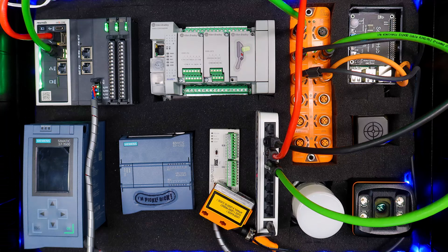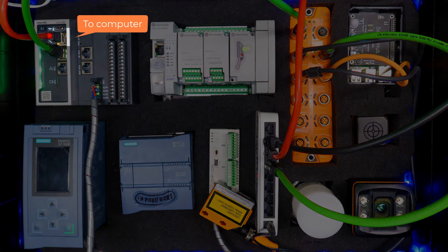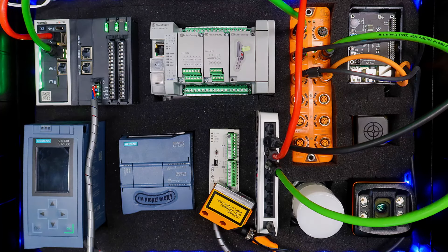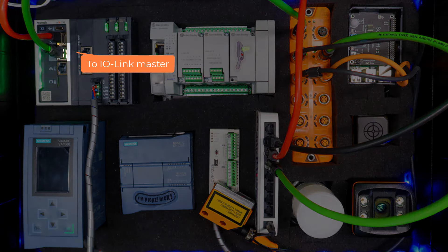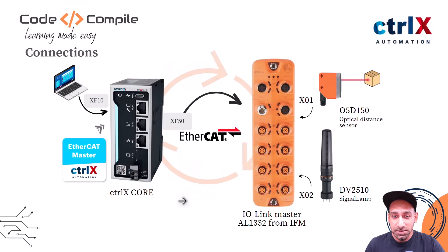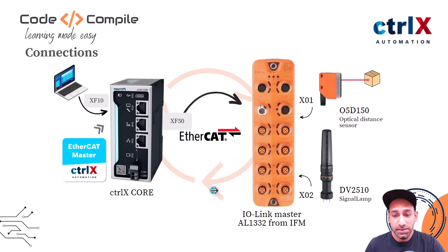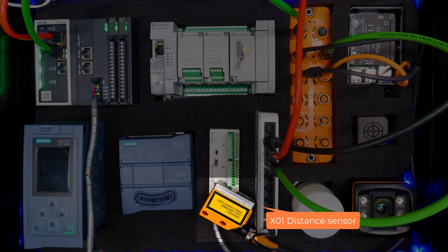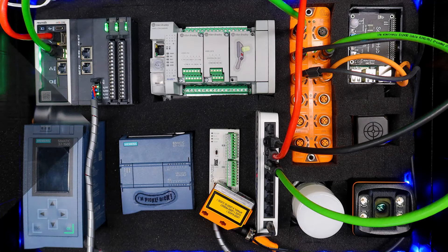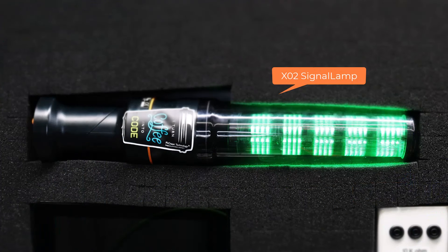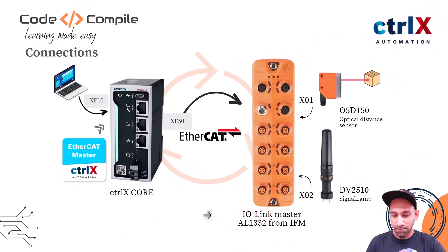Let's see the connections first. As you can see, I have ControlX Core connected with terminal XF10 to my computer via Ethernet, and XF50 is going to the IO-Link master. The IO-Link master has a 24V power supply and is connected to my network. I'm using two ports: X01 for an optical distance sensor and X02 connected to a signal lamp — you can see both devices on my trainer.